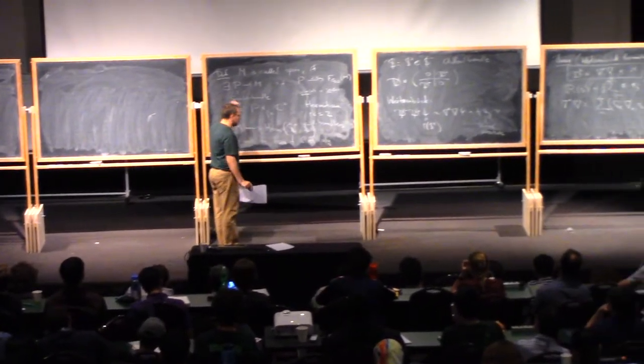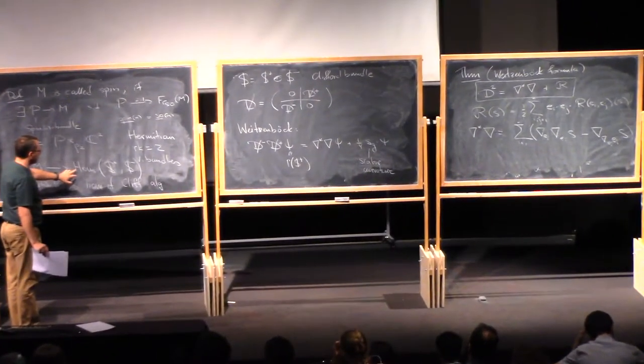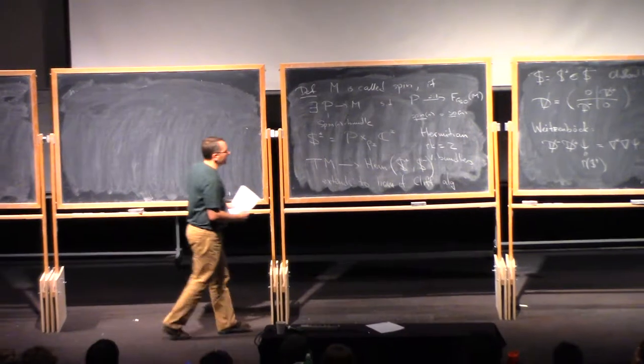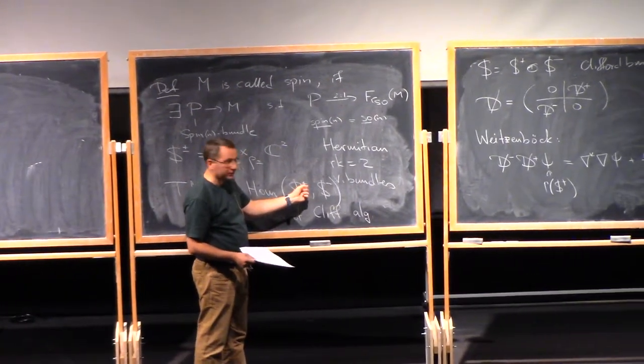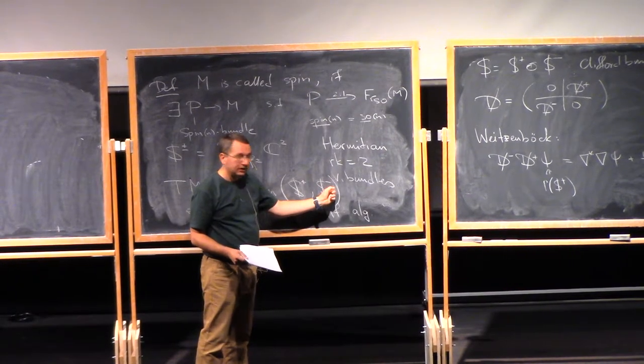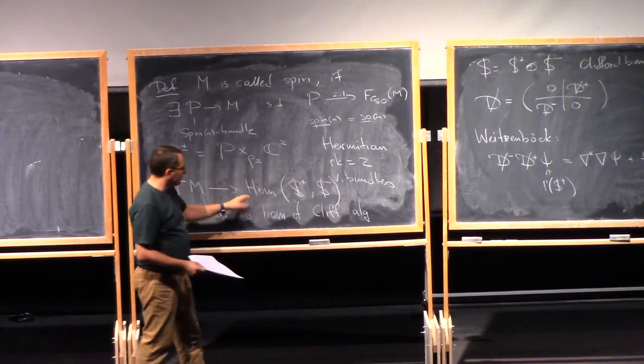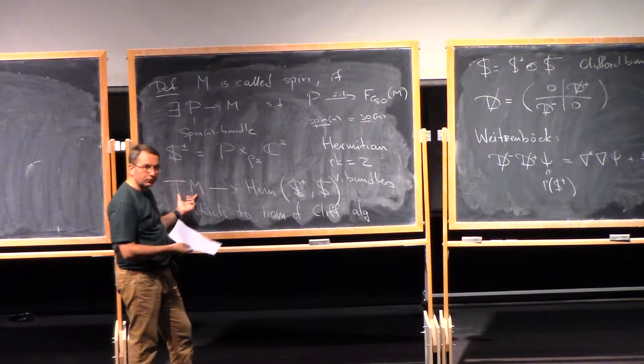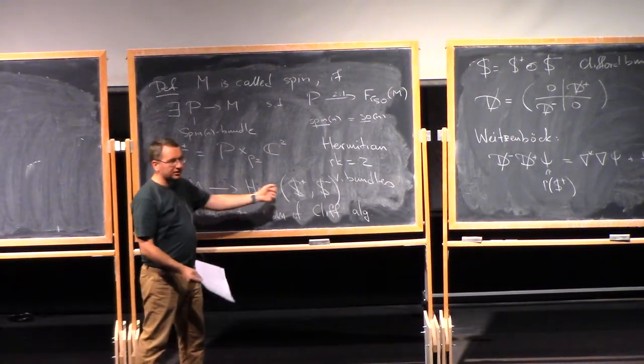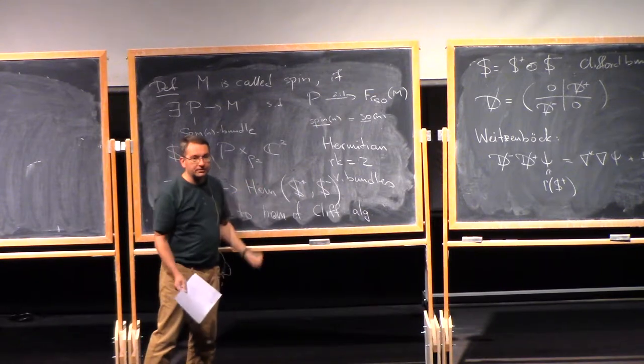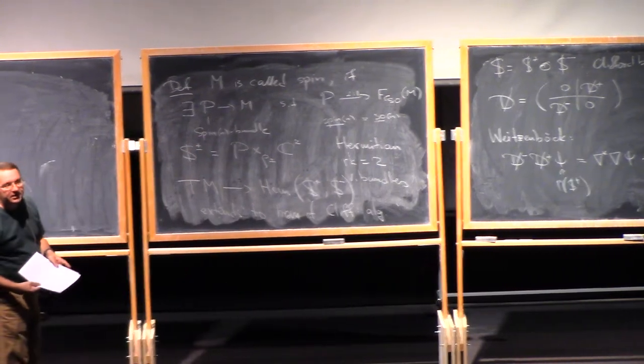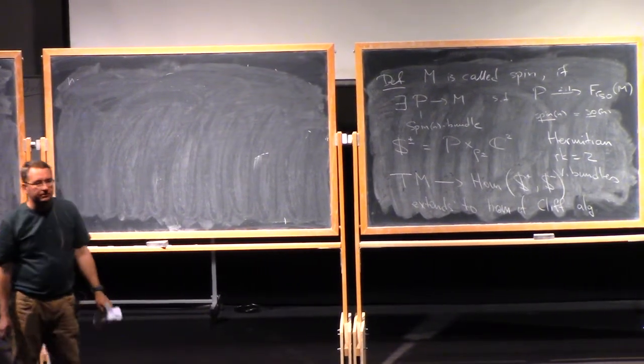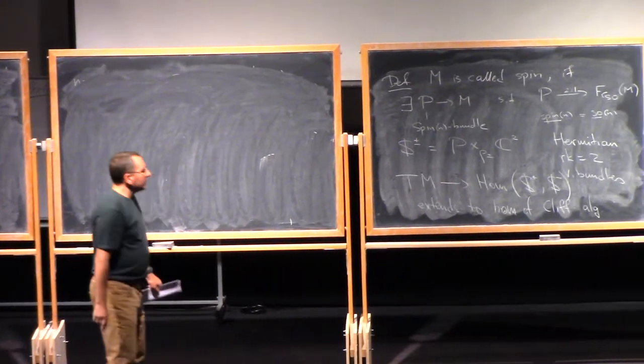So how do you define the map of TM to hom S plus S minus? Right, so this is a question about representations. So what I'm saying is that if you view S plus as a representation of spin 4, and S minus is a representation of spin 4, then the homomorphism is the complexification of the canonical representation of spin 4 through SO4. And this actually tells you that there is such an isomorphism. There is such a homomorphism. I mean, you can do this also explicitly, but this is a very quick way to see that there is such an essentially unique homomorphism.